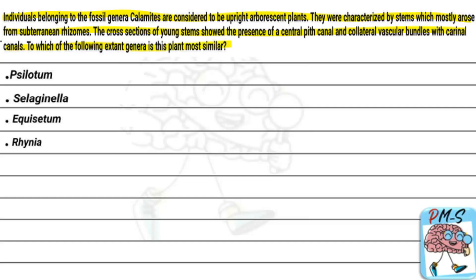So, what is our Calamites fossil genera? We have been told about how the plants were upright arborescent plants, and how they arose from subterranean rhizomes. The cross-section of young stems — if it was a cross-section of young stems, meaning horizontally cut — showed a central pit canal and collateral vascular bundles with carinal canals.